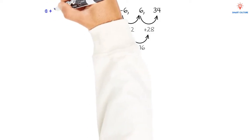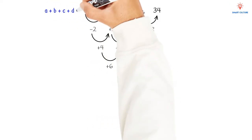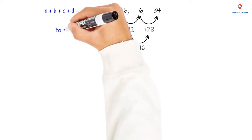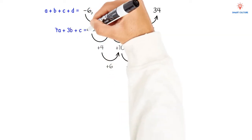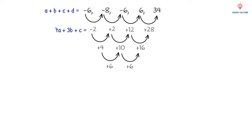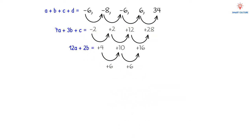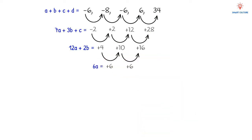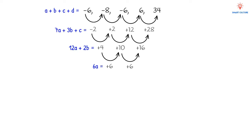Now we apply the four equations to our values. a + b + c + d equals the first term, which is -6. 7a + 3b + c equals the difference between the first two terms, which is -2. 12a + 2b equals the first second difference, which is 4. And 6a equals the third difference, which is 6.